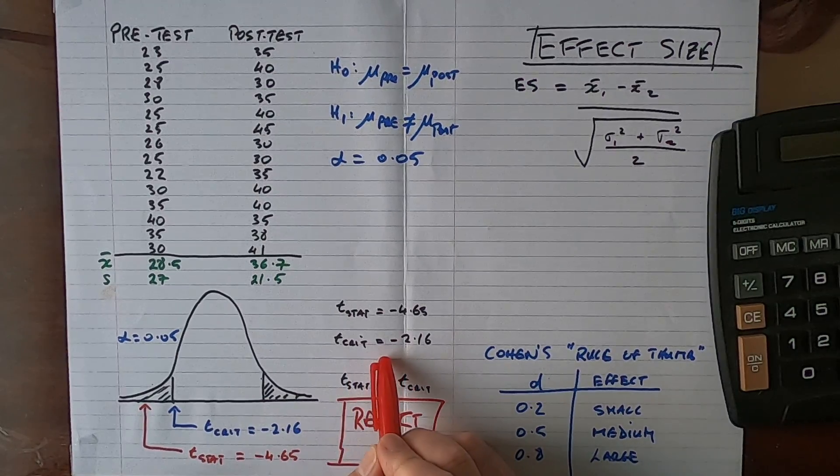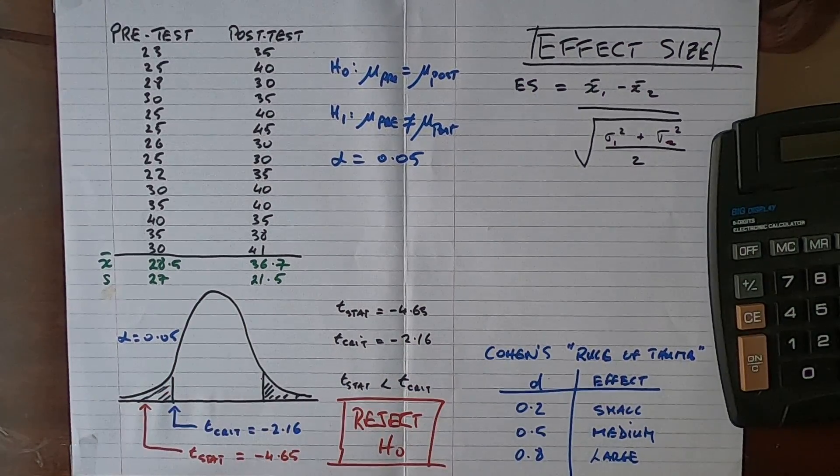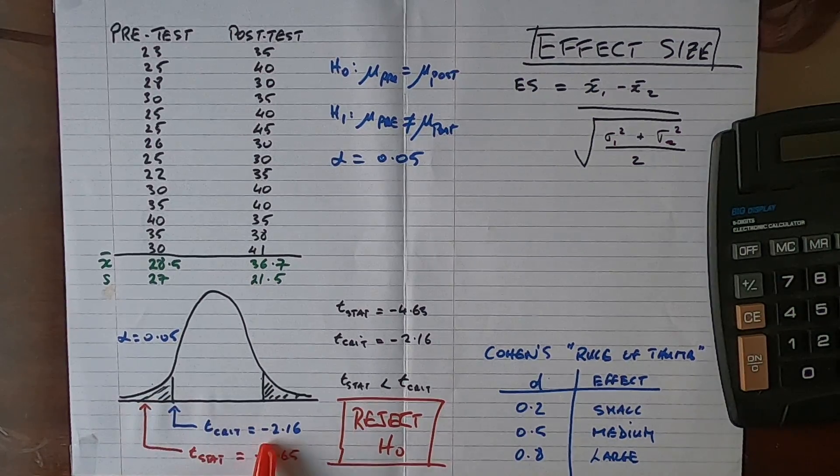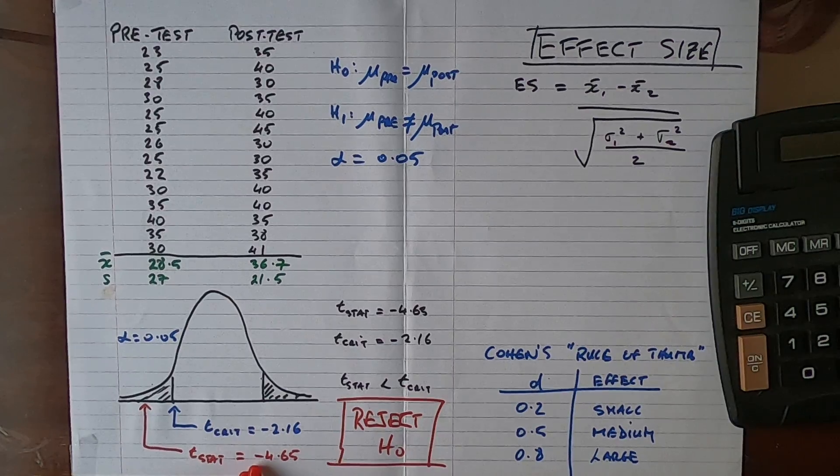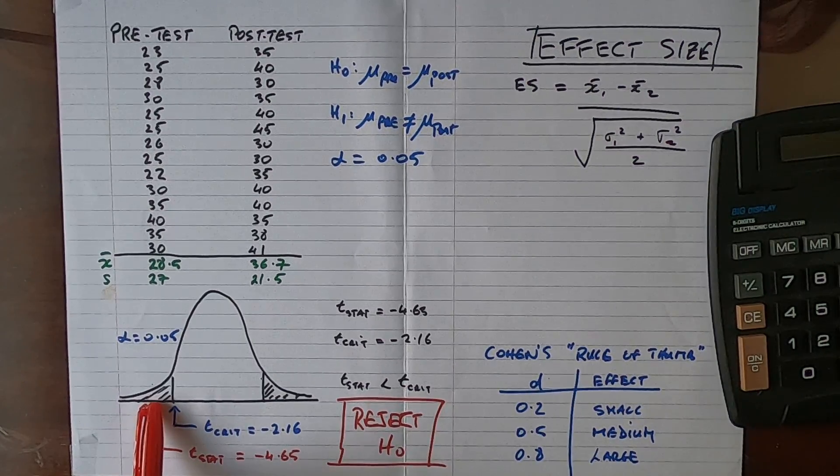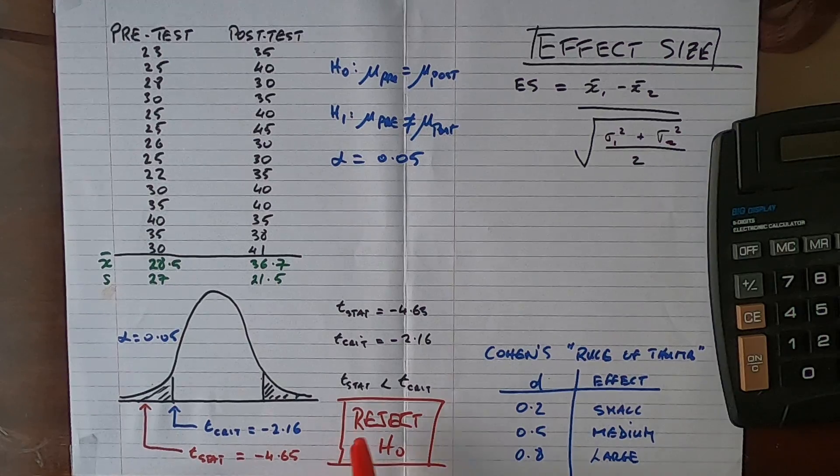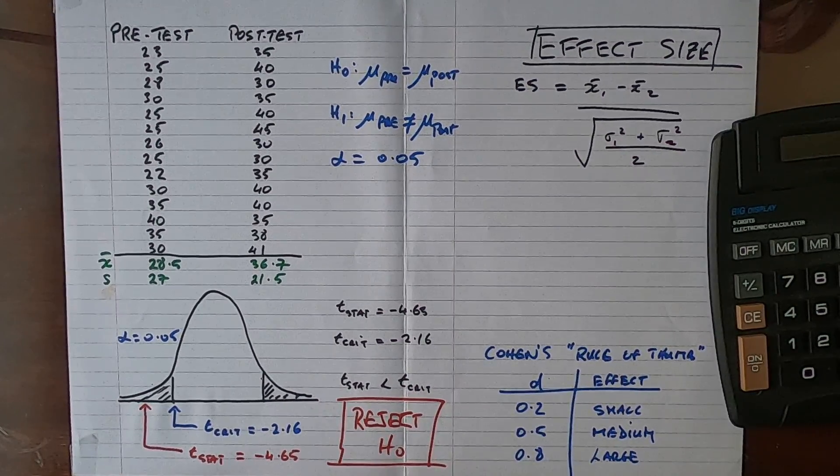From t-tables I found that the critical value was minus 2.16, and I plotted that onto the t-distribution. We can see because we have a minus number we're in the left tail. Our critical value is minus 2.16, our test statistic is minus 4.65, it falls into our reject region. Therefore we have evidence to reject the null hypothesis because our t-stat is less than our t-crit in the left tail.